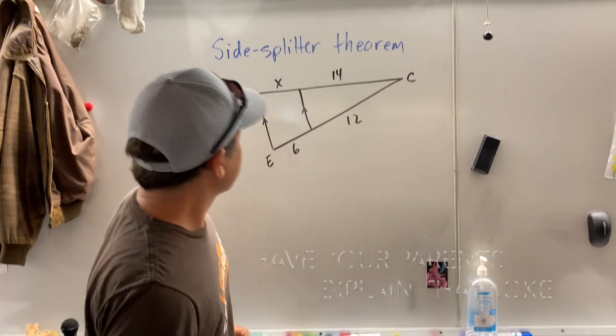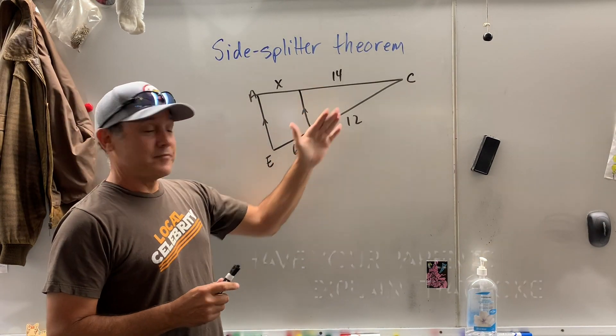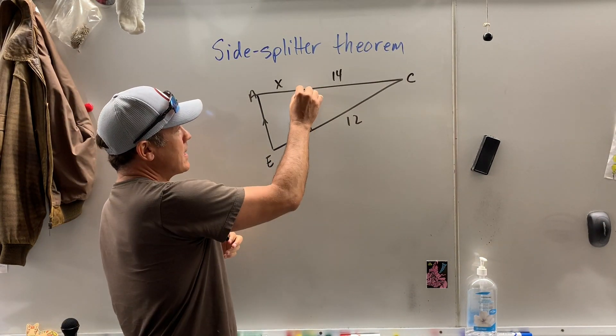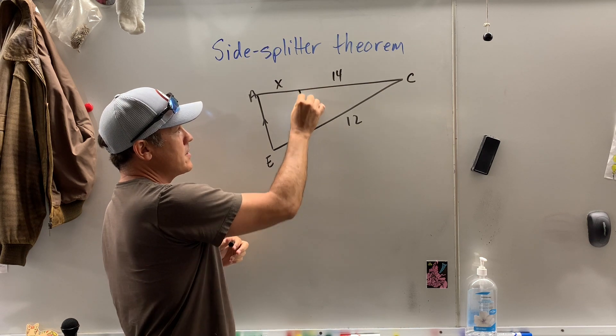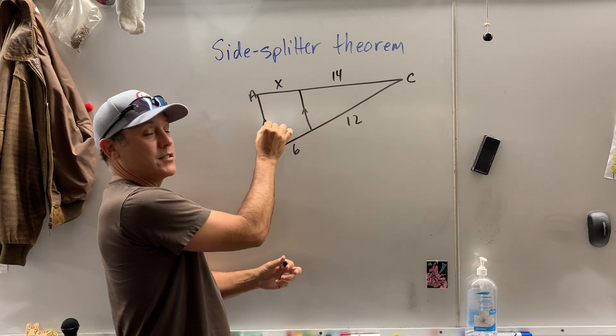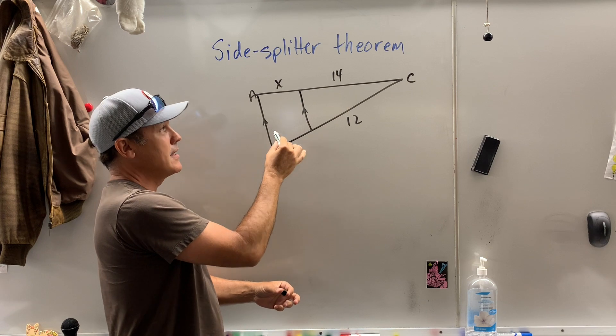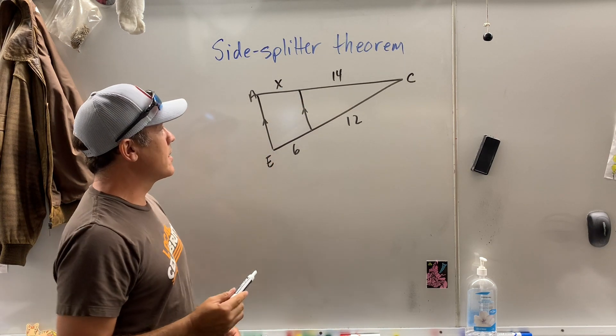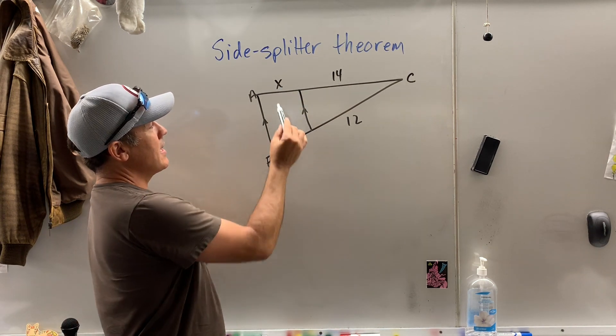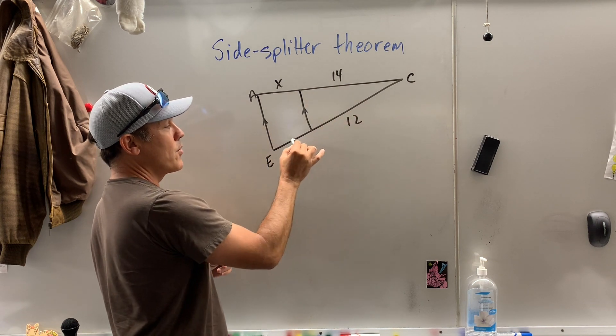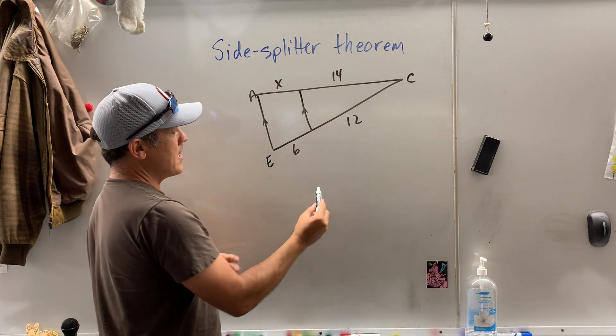So when you have a triangle and you connect two sides of the triangle with a line parallel to the third side, which I've done here, the side splitter theorem comes in handy. What it says is it breaks these segments proportionally. What does that mean?